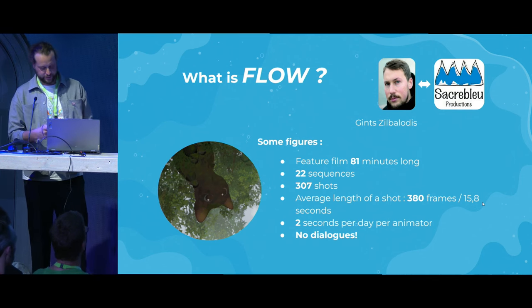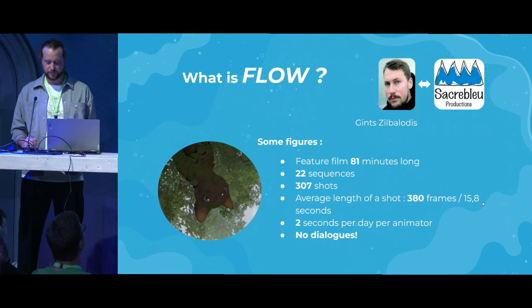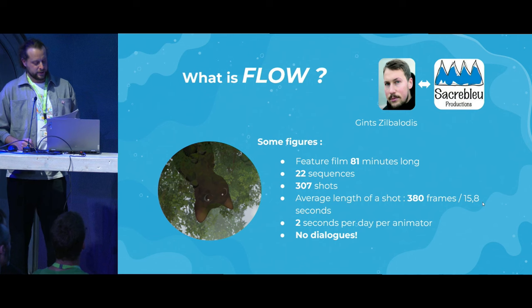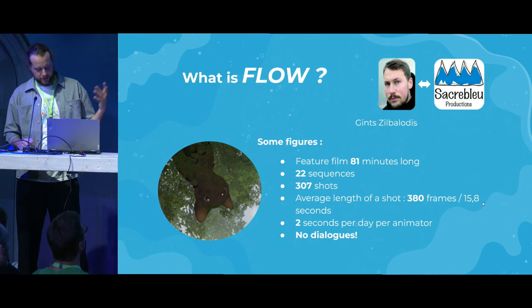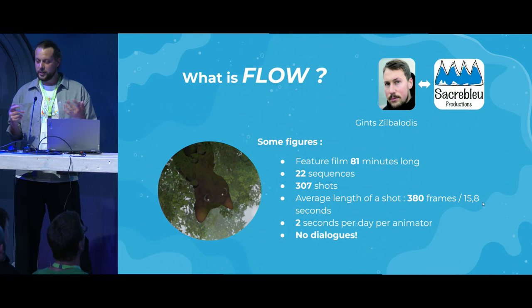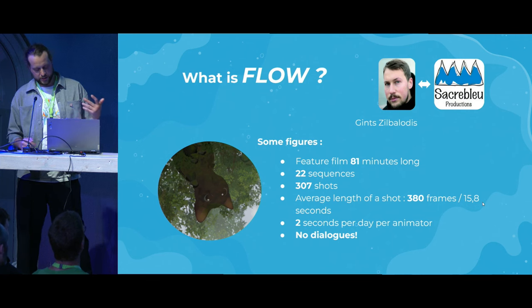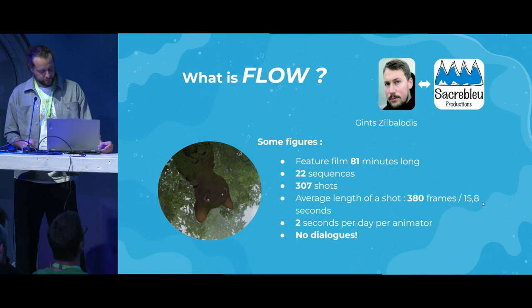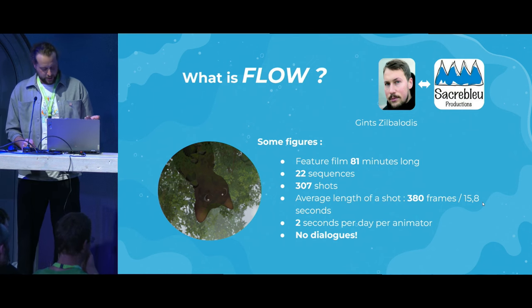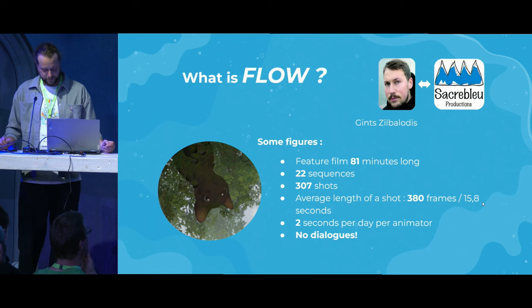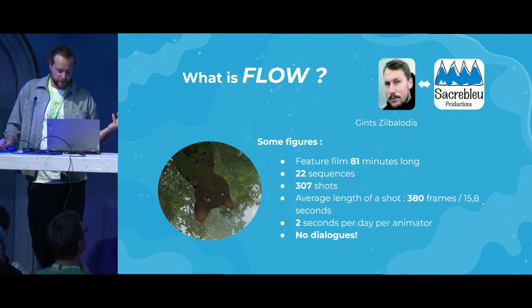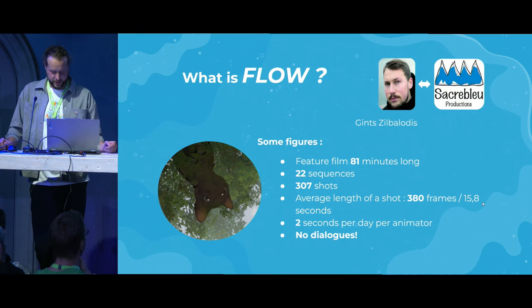Let's talk about Flow. When I was introduced to Gints by the producers of Sacrebleu, I knew he had his own style and was used to working alone. Thanks to my experience, I was able to adapt to his style and bring my knowledge. We quickly got on the same page and started developing animation. Flow is about a solitary cat who had lived his entire life in seclusion, threatened by a monstrous rise in waters, and was forced to live with other animals to survive. The film focuses on communication, understanding, respect, and solidarity between living beings.